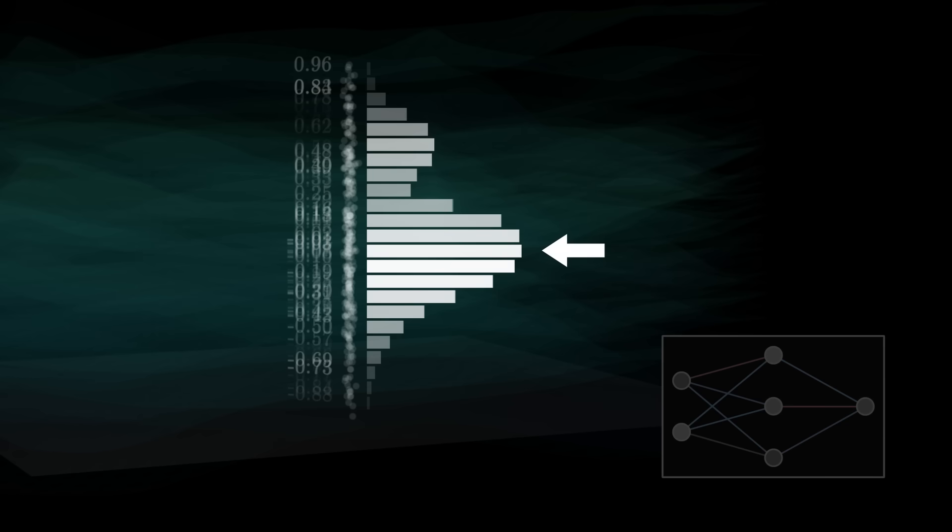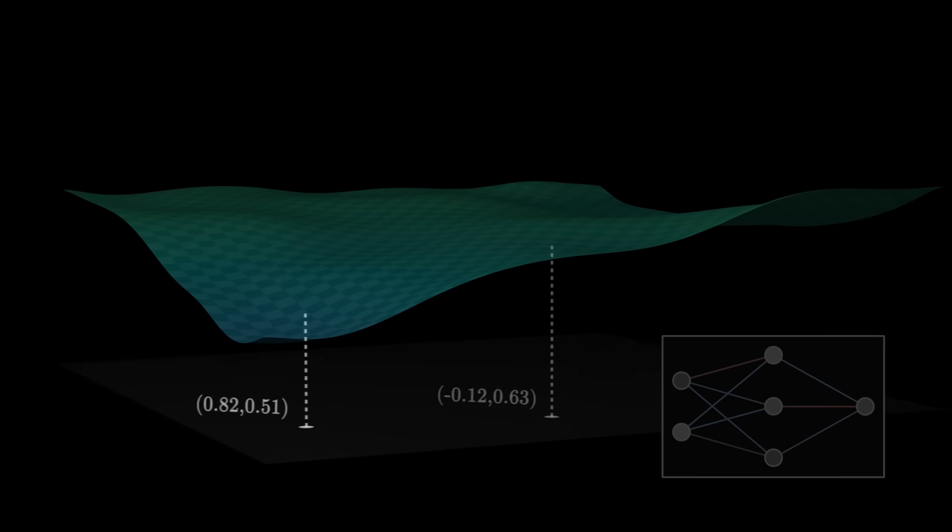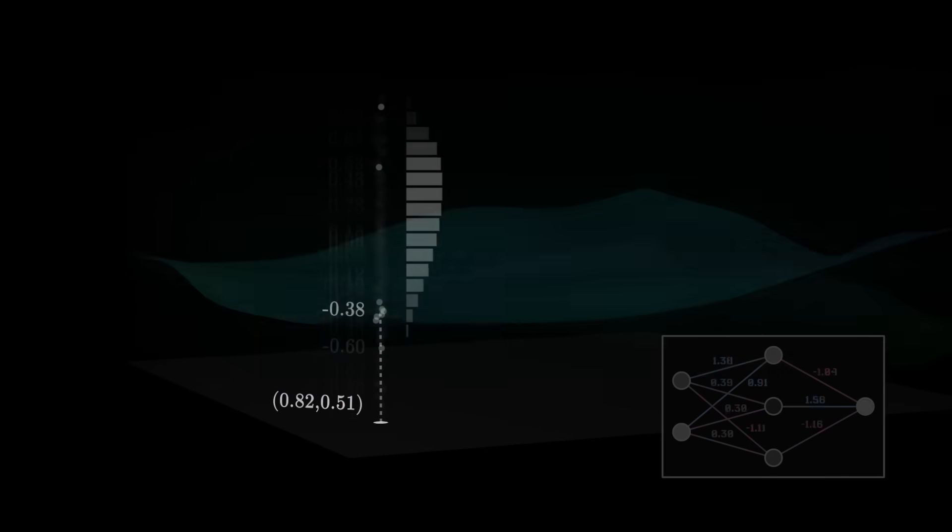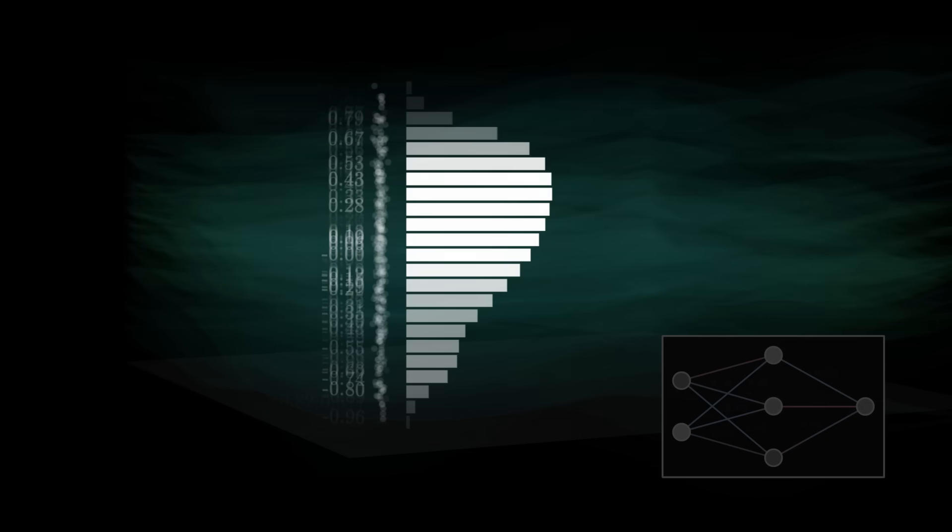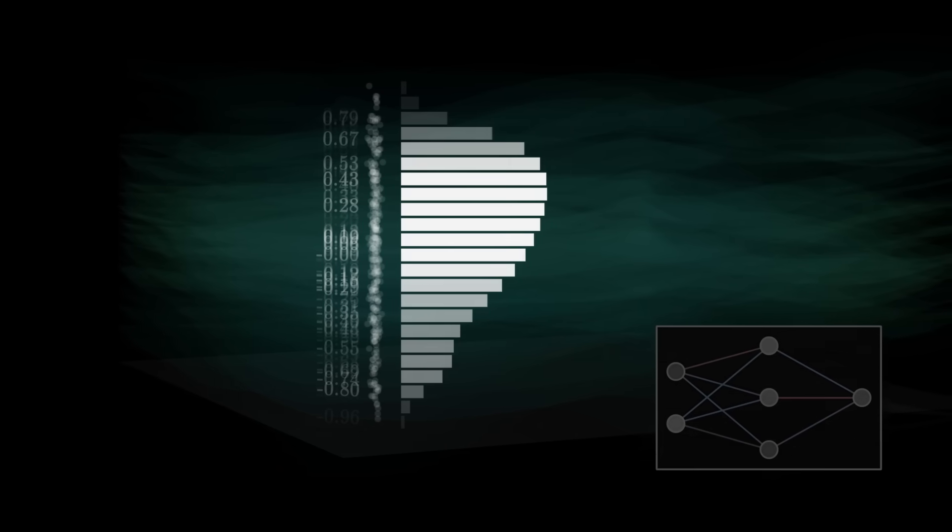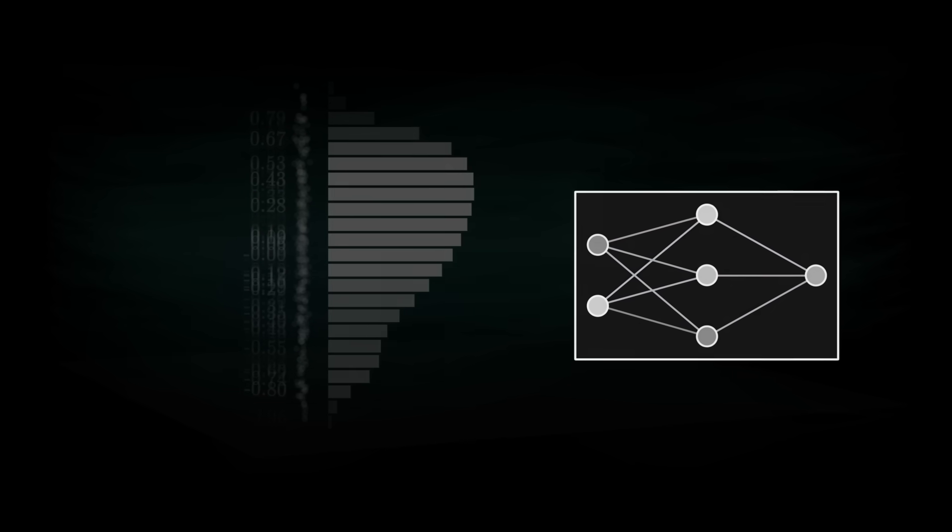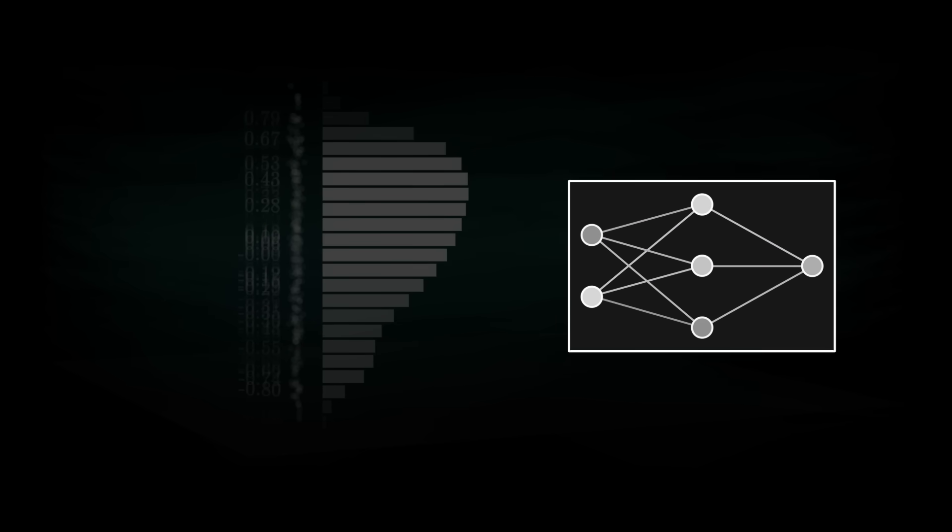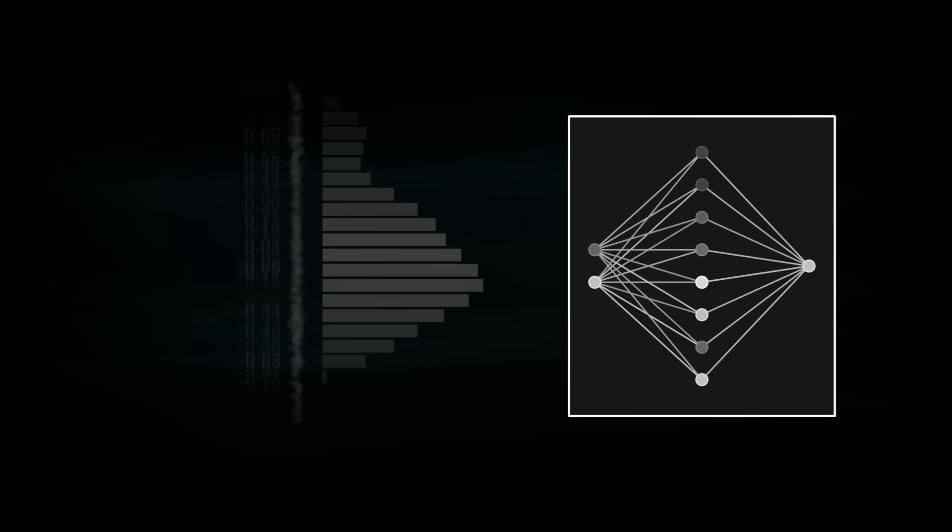Of course, the distribution of values is not the same if we look at another point. It also changes if we increase the number of neurons in the network. As the network widens, the distribution evolves.